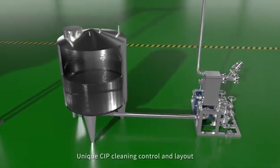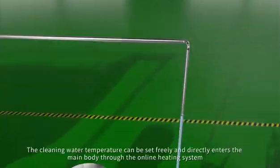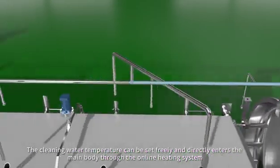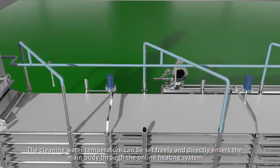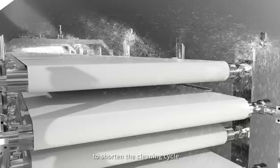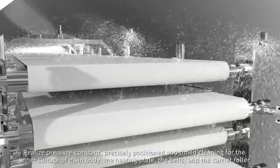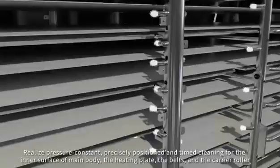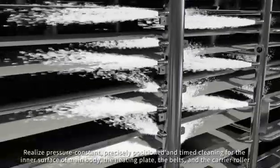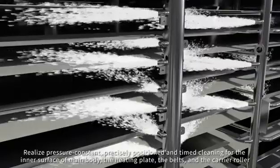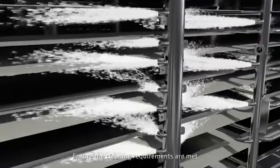Unique CIP cleaning control and layout. The cleaning water temperature can be set freely and directly enters the main body through the online heating system. To shorten the cleaning cycle, realize pressure constancy, precision, and timely cleaning for the inner surface of main body. The heating plate, the belt, and the carrier roller ensure the cleaning requirements are met.